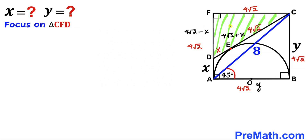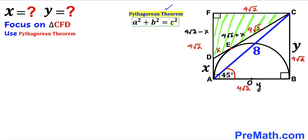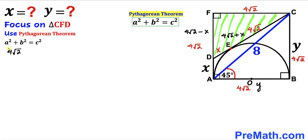We apply the Pythagorean theorem on right triangle CFD to find X. The hypotenuse is 4√2 + X, and the two legs are 4√2 and 4√2 − X. So the equation is: (4√2)² + (4√2 − X)² = (4√2 + X)².